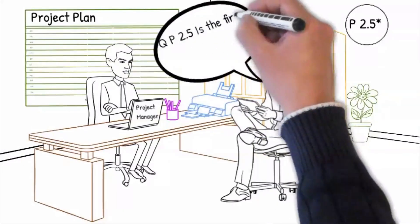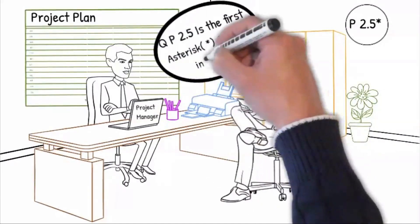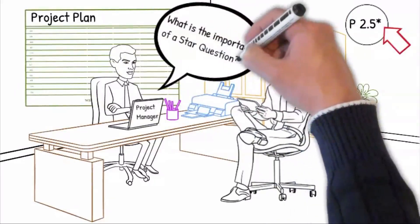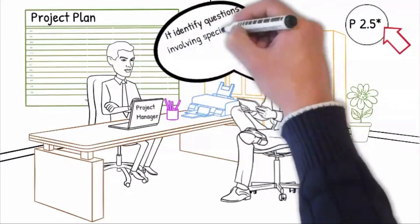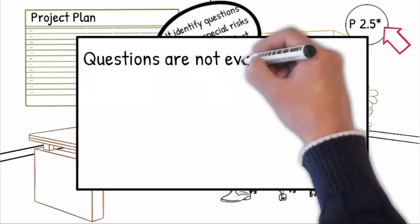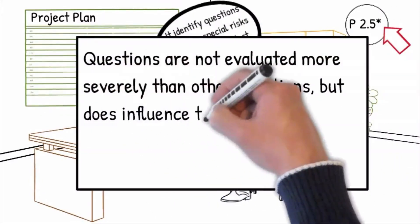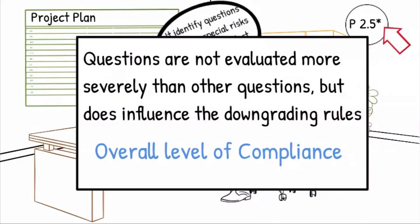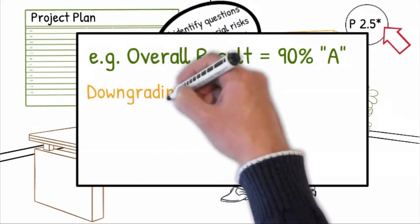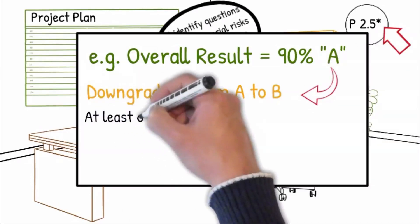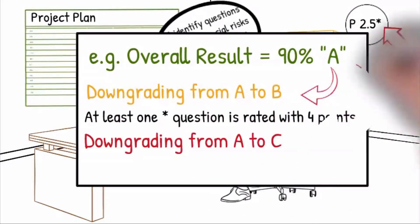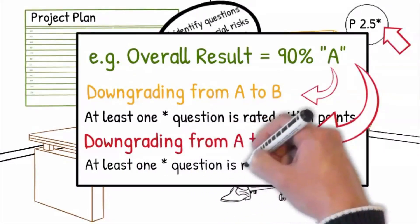Question P2.5 is the first asterisk question in this VDA 6.3 P section. What is the importance of a star question? It identifies questions involving special risks in terms of product and process. The questions are not evaluated more severely than other questions, but do influence the following downgrading rules on the overall assessment result. For example, if you had an overall 90% A rating result, you will be downgraded from A to B when at least one asterisk question is rated with 4 points, or downgraded from A to C when at least one asterisk question is rated with 0 points.